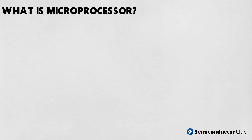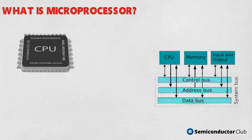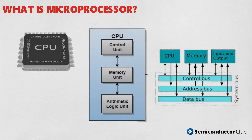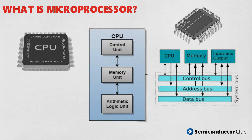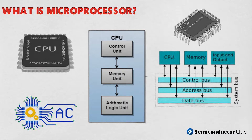What is a microprocessor? A microprocessor is any of a type of miniature electronic device that contains the arithmetic, logic, and control circuitry necessary to perform the functions of a digital computer's central processing unit. In effect, this kind of integrated circuit can interpret and execute program instructions as well as handle arithmetic operations.